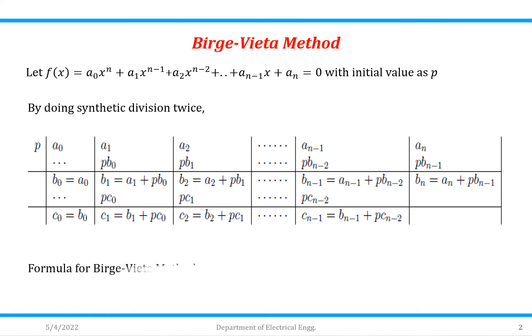Formula for Birge-Vieta method is p₁ = p₀ - bₙ/(cₙ₋₁) where n is the order of equation.